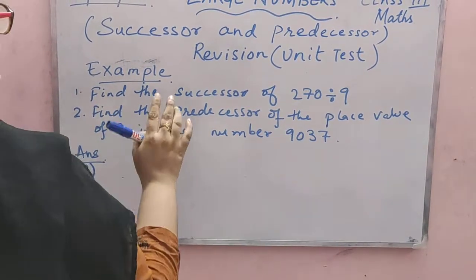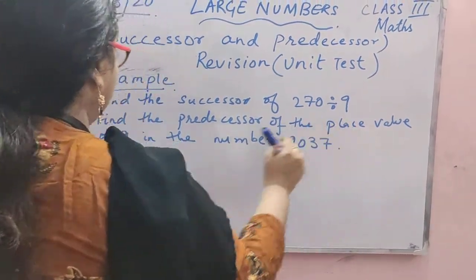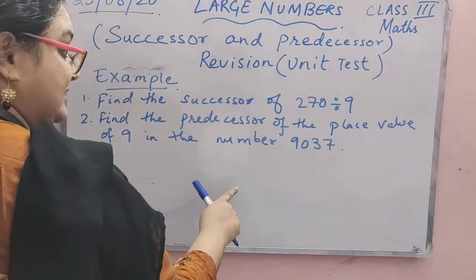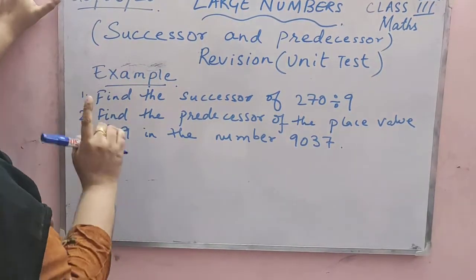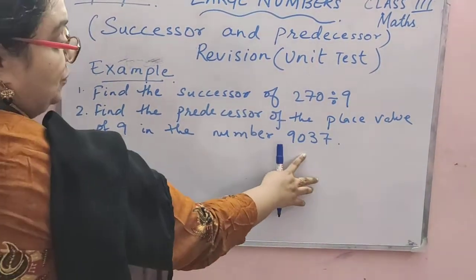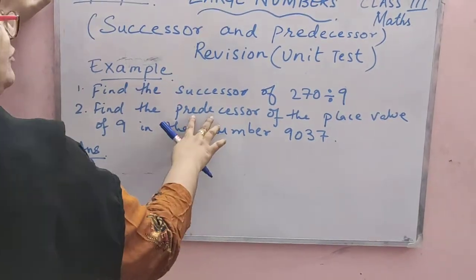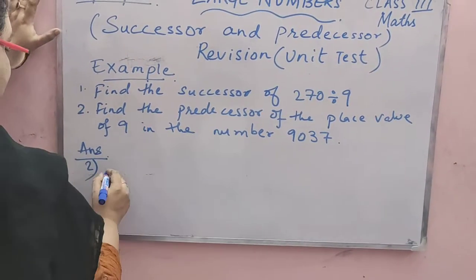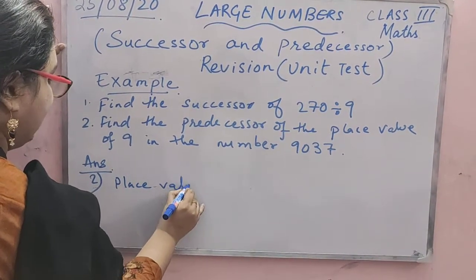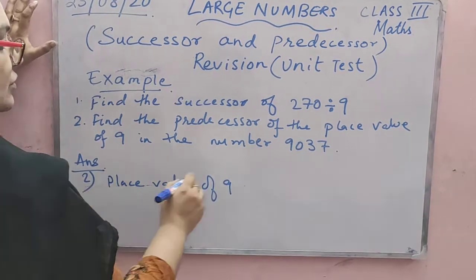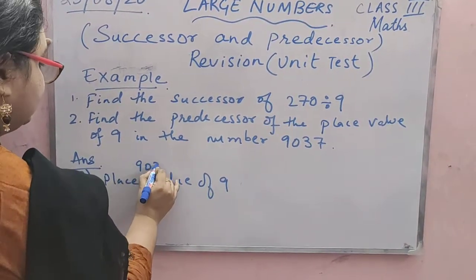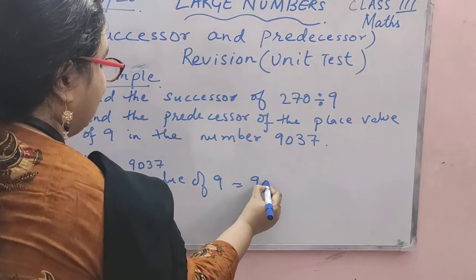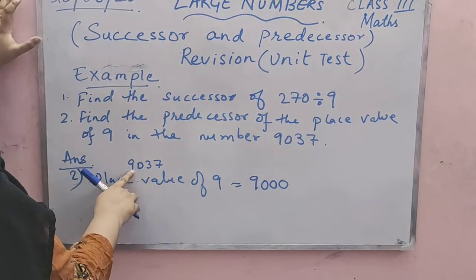Number 2: find the predecessor of the place value of 9 in the given number. So what you have to do — you have to find the predecessor of the place value of 9. First, you have to find the place value of 9 from this numeral, and of that place value you have to find the predecessor. I will show you the steps. So first we have to find the place value of 9 in this number. The place value of 9 is 9000, because it is in the thousands place. So 9000.